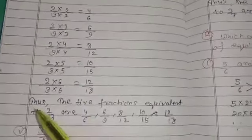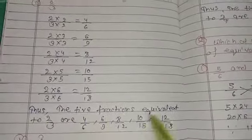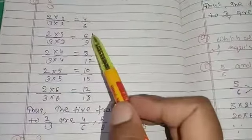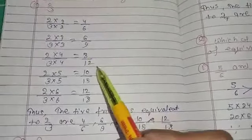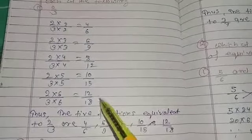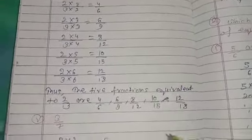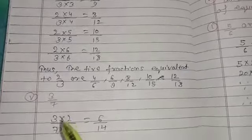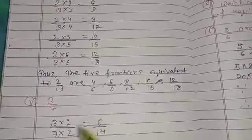So you have five equivalent fractions to 2 upon 3: 4 upon 6, 6 upon 9, 8 upon 12, 10 upon 15, 12 upon 18. The next question is 3 upon 7. Use a similar process, multiplying both numerator and denominator.